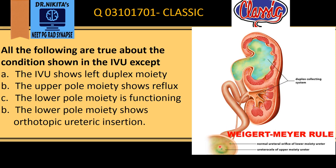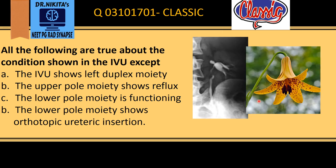The upper pole ureter moiety has a ureterocele, because of which this upper pole is obstructed, while the lower pole moiety shows reflux. Since this upper pole moiety is obstructed and enlarged, it does not opacify on the IVP. However, because it is enlarged, it exerts pressure on the lower pole moiety.